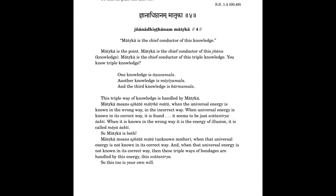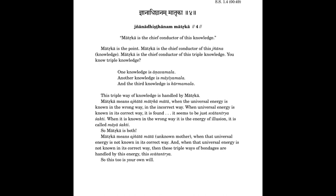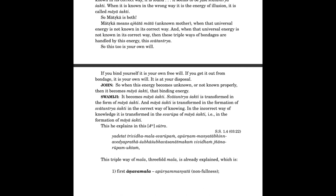Matrika means ajyata matrika, mata. When the universal energy is known in the wrong way, in the incorrect way, it is found, it seems to be just swatantra shakti. When it is known in the wrong way, it is energy of illusion. It is called maya shakti. So matrika is both. Matrika means ajyata matrika, when that universal energy is not known in its correct way. And when that universal energy is known in its correct way, then these triple ways of bondages are handled by this energy, this swatantra. So this too is your own will.